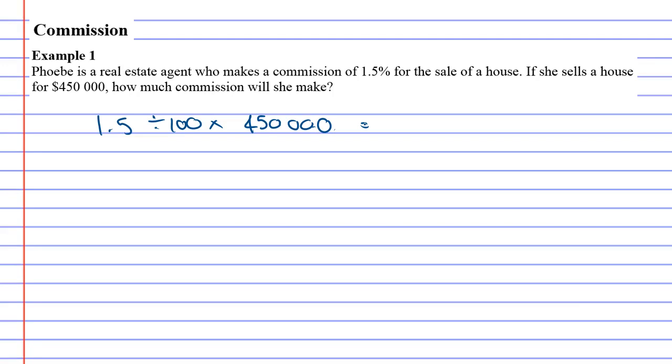And this commission comes out to $6,750. Real estate agents quite often don't get a retainer and they only get a percentage of their sales, but when they do sell, they do really well.